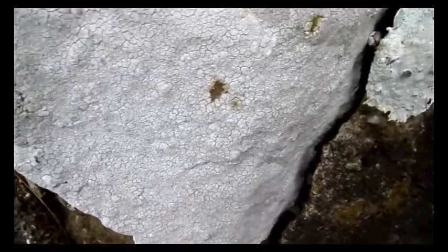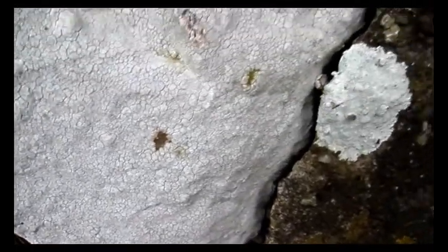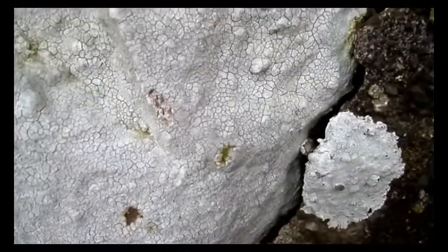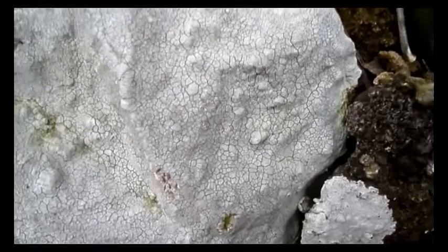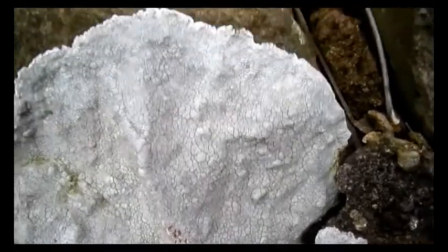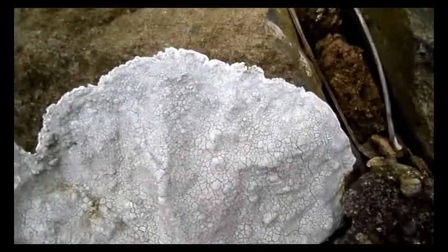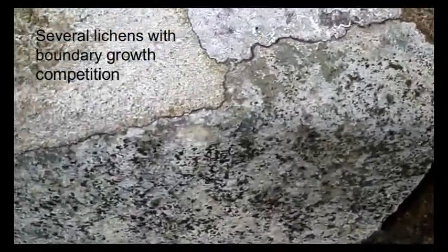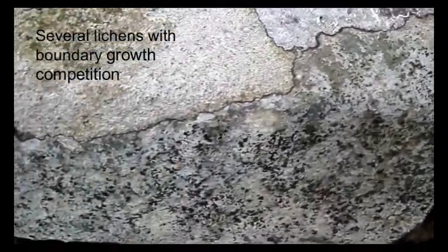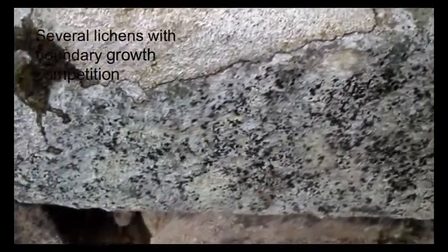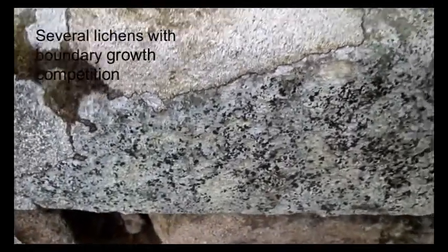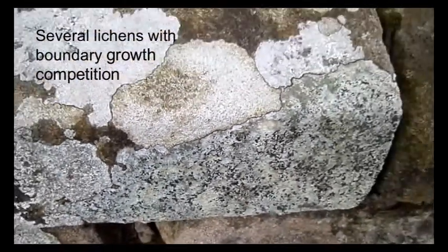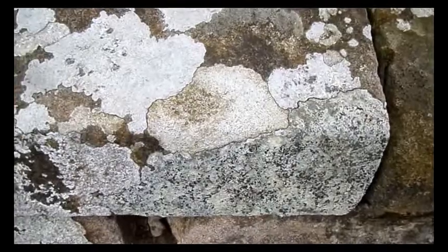The hexagonal shapes that you see on the surface are called areola or lenses. These are roughly hexagonal shapes that are cracks between the different parts of the body of the lichen, and allow it to expand or contract with either sunshine or after rain.